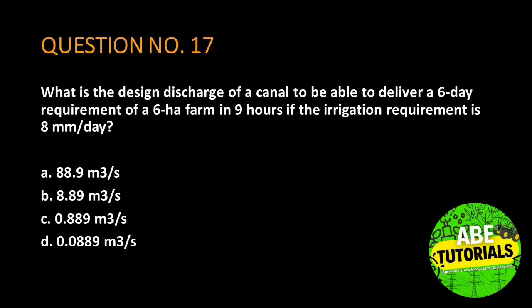Question number 17. What is the design discharge of a canal to be able to deliver a six-day requirement of a six-hectare farm in nine hours if the irrigation requirement is eight millimeters per day?